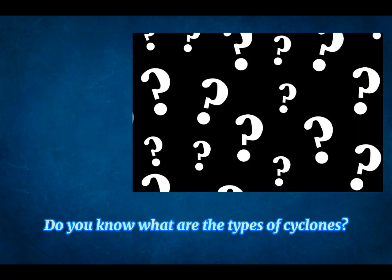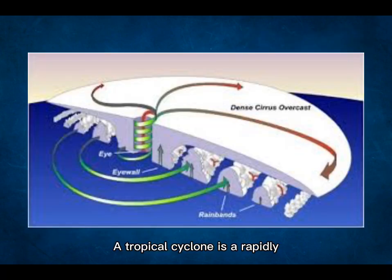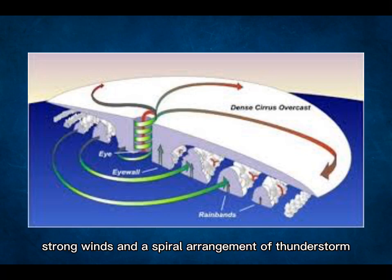Do you know what the types of cyclones are? The two types are tropical cyclone and extra-tropical cyclone. A tropical cyclone is a rapidly rotating storm system characterized by a low pressure center, a closed low-level atmospheric circulation, strong winds, and a spiral arrangement of thunderstorms that produce heavy rain and squalls.